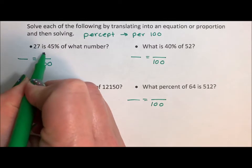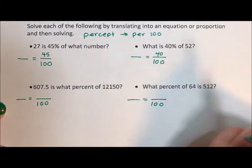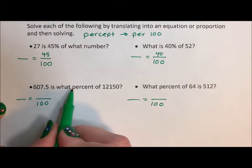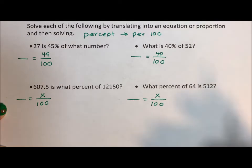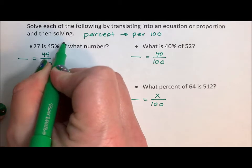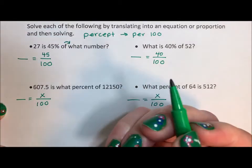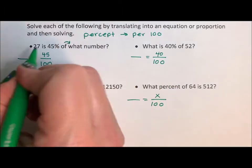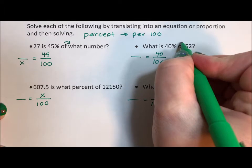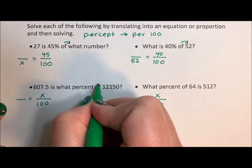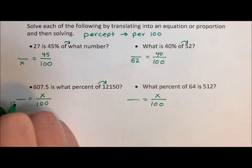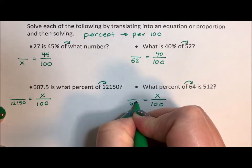So 45 percent is 45 per 100 and 40 percent is 40 per 100. This one doesn't have a percent, it says what percent, so that's going to be our unknown, our variable. And this one also says what percent, so that will also be our unknown. Next thing we're going to do is look for the word of. What comes directly after the word of is our other denominator. So of what number means that becomes our unknown. Of 52 means 52 becomes our other denominator. Of 12,150 means 12,150 becomes our denominator. And of 64 means 64 becomes our denominator.